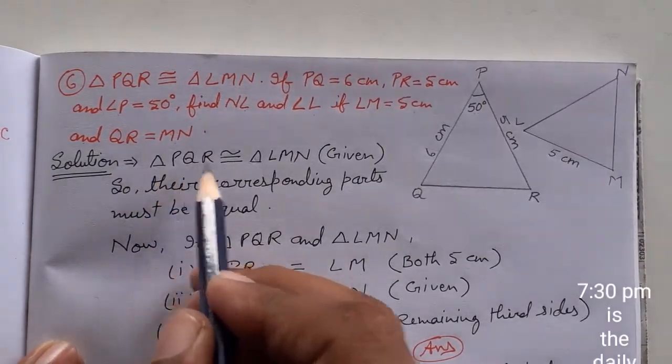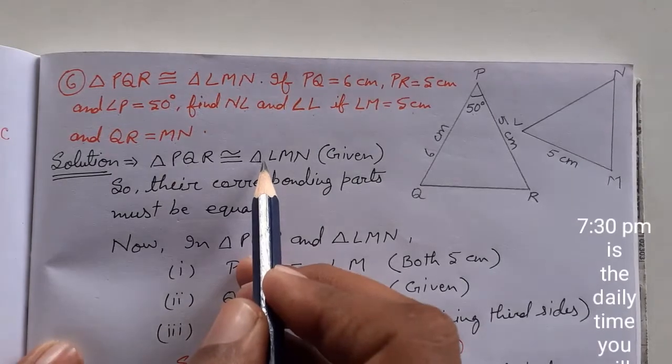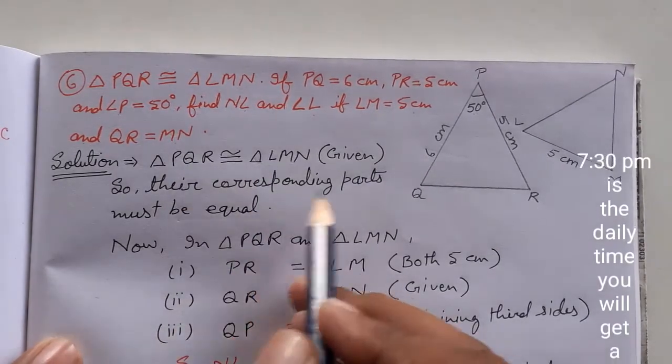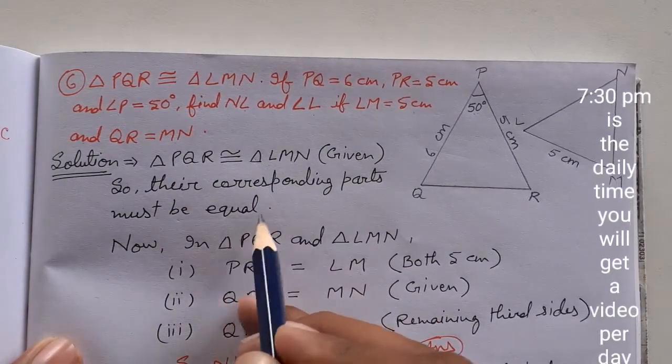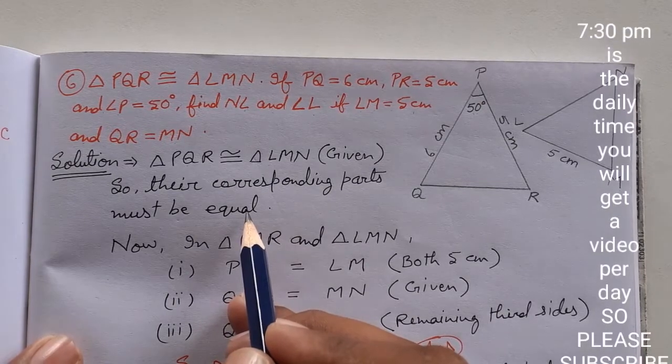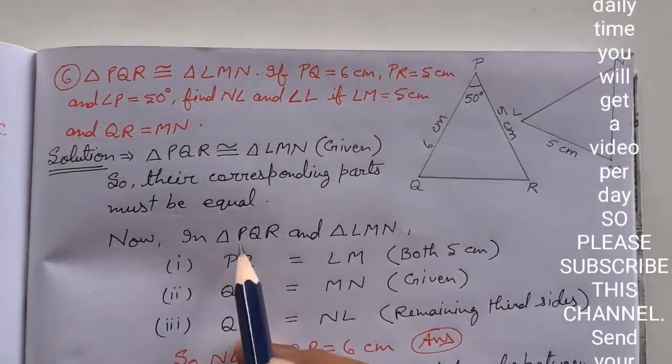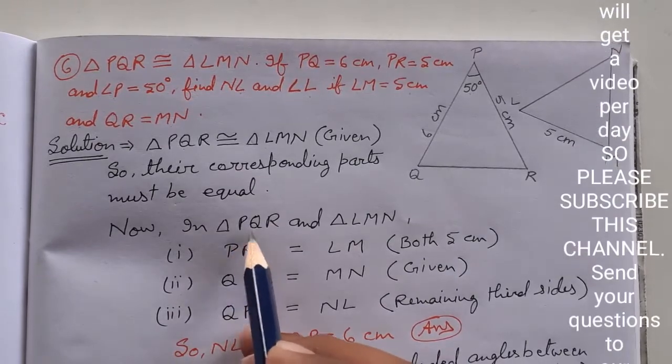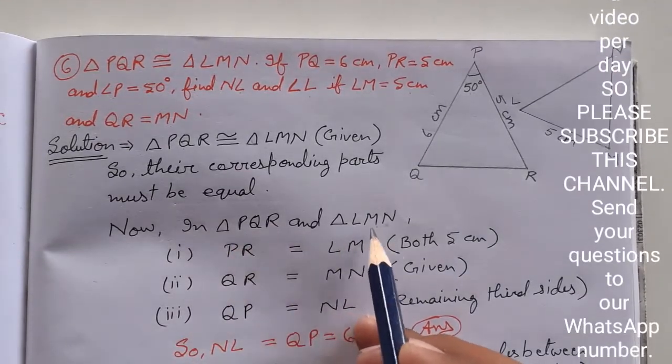If we know that both triangles are congruent, their corresponding parts must be equal. Now we are here in triangle PQR and triangle LMN.